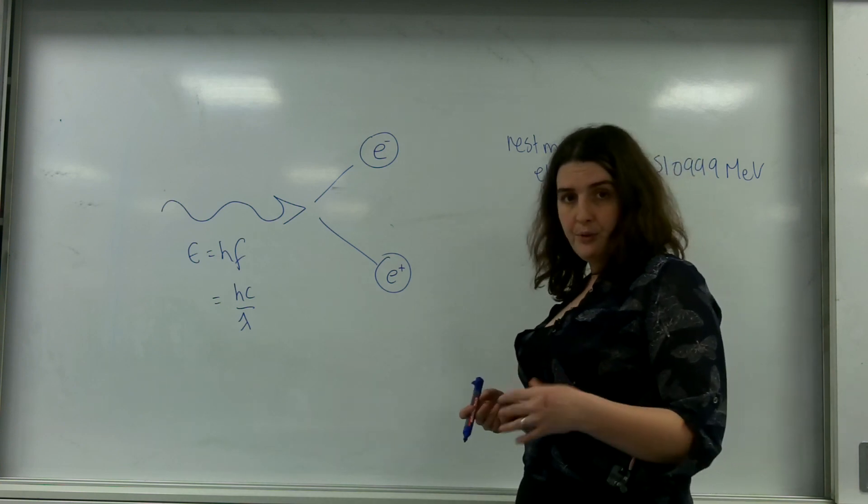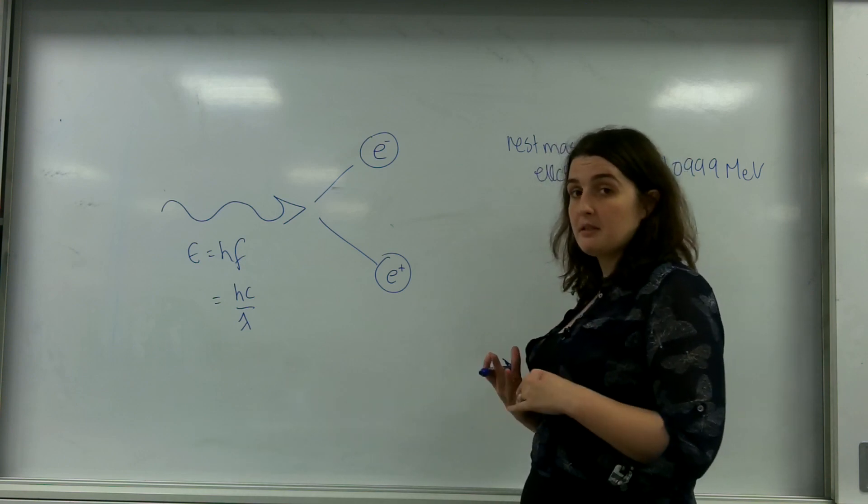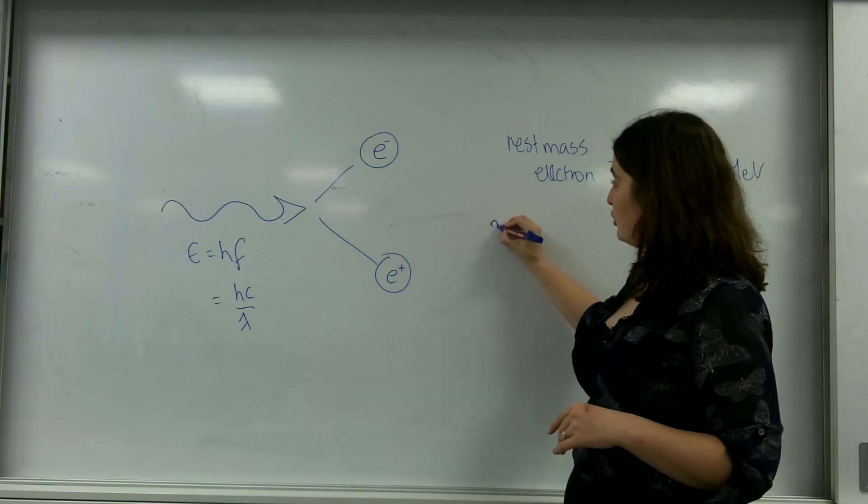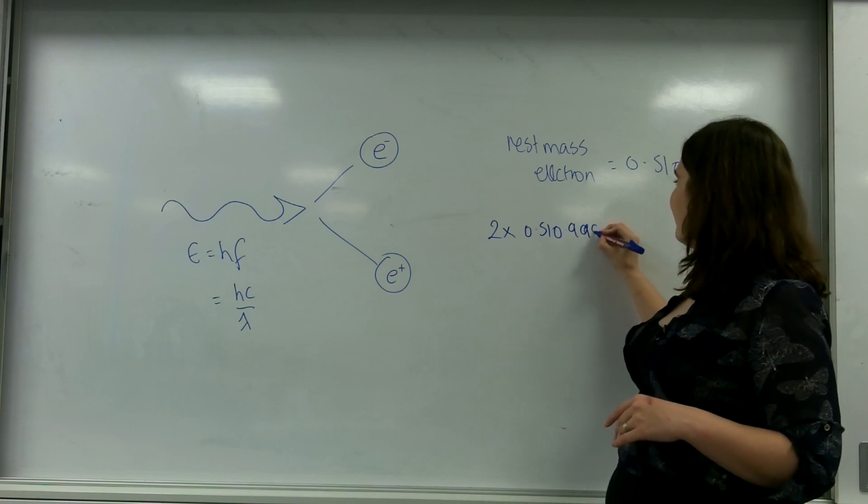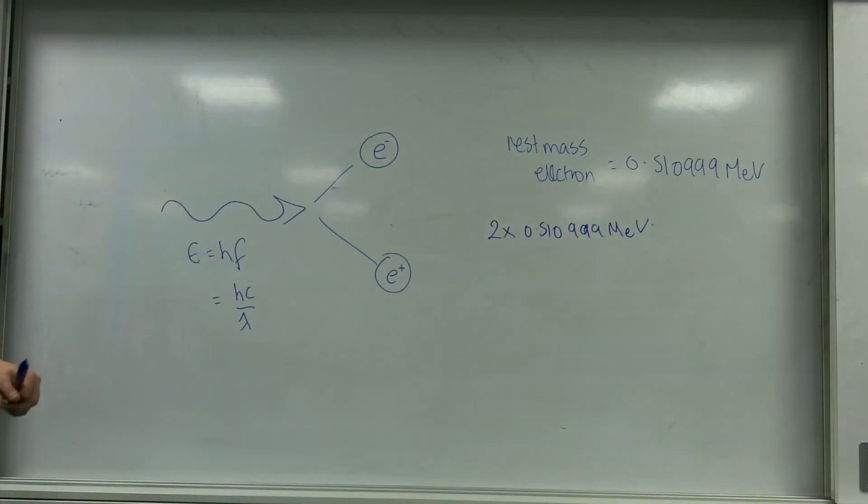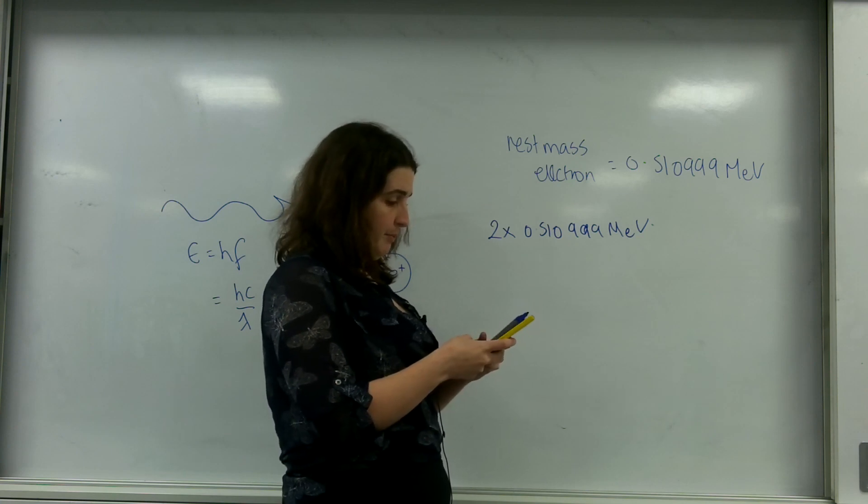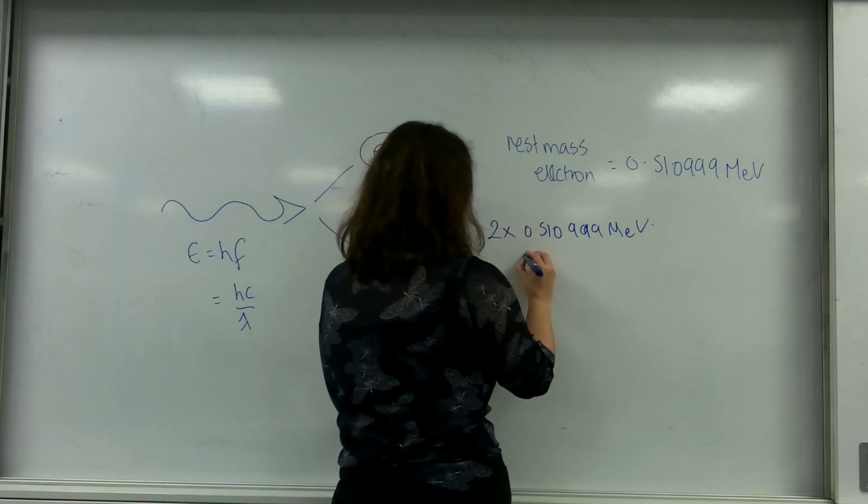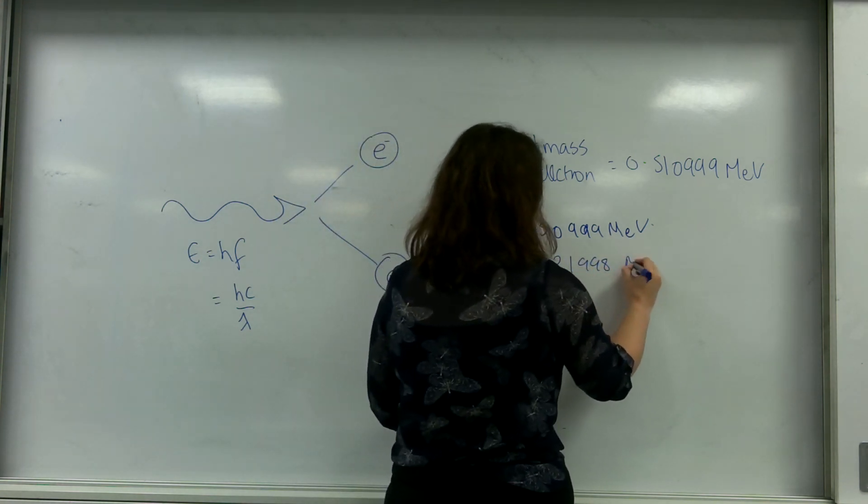This means this photon must have a minimum amount of energy to create these in the first place, because energy must be conserved. So on this side I have 2 times 0.51099 megaelectron volts, which is, if I just grab a calculator. So here 2 times 0.51099 and that is 1.21998 megaelectron volts.